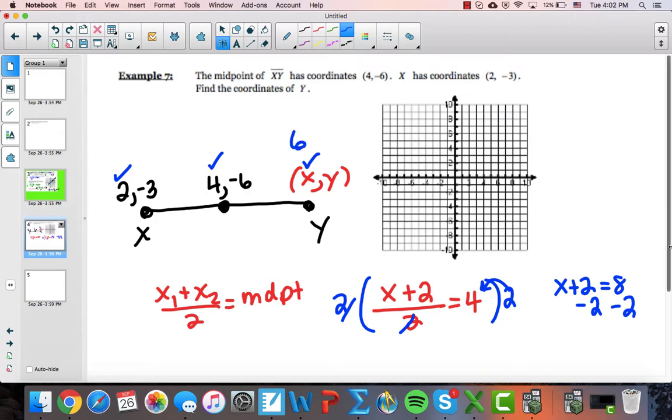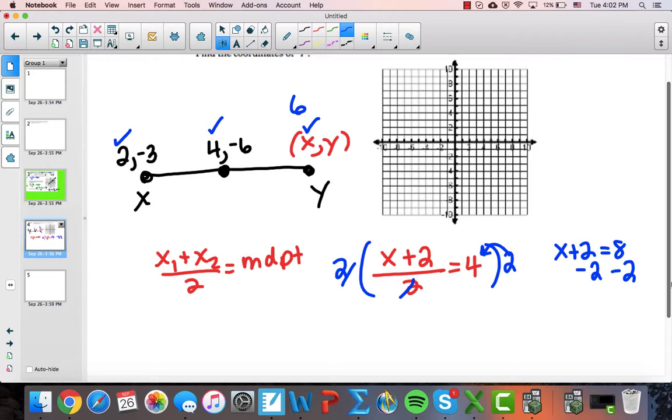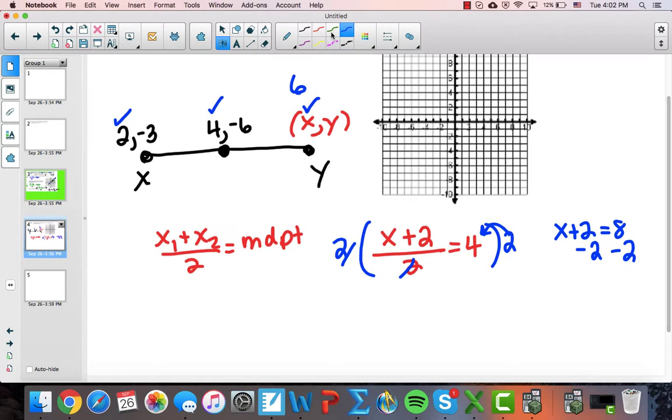Now I'm going to do the y's. So let me get some more space here. So then I'm going to do the y's, and I'm going to switch colors to green. Let's do this: y plus negative 3 becomes y minus 3 over 2 equals -6.